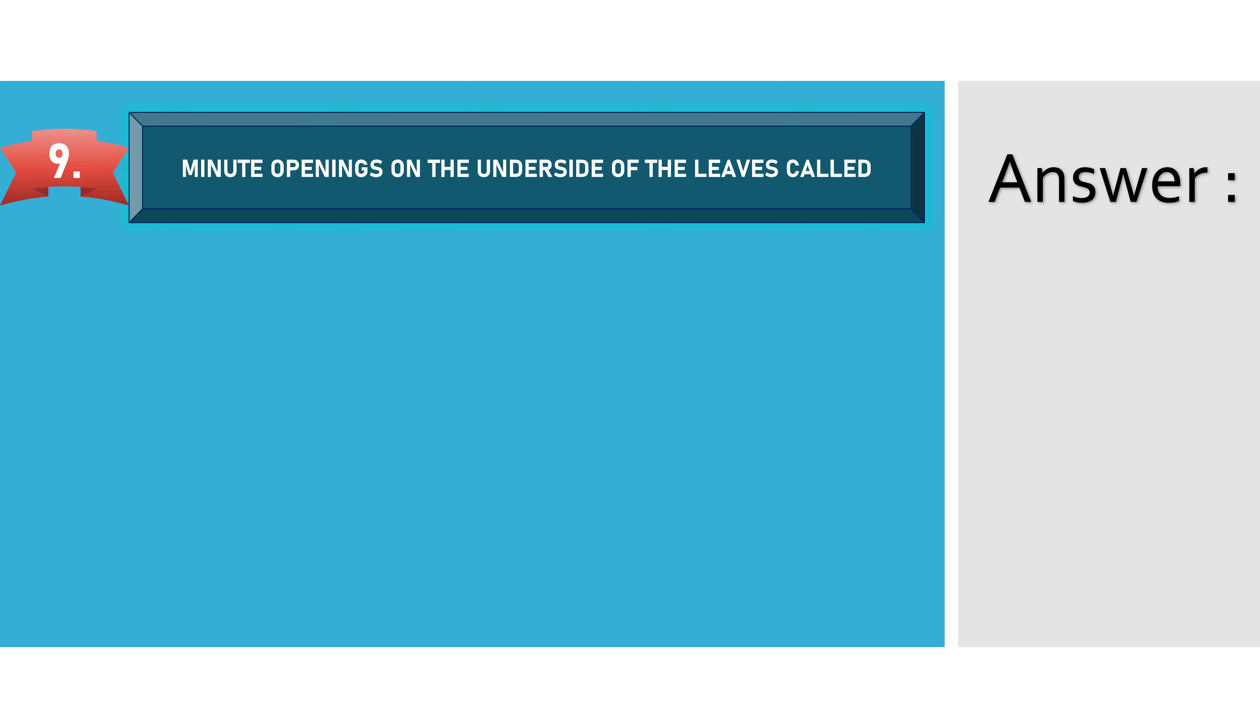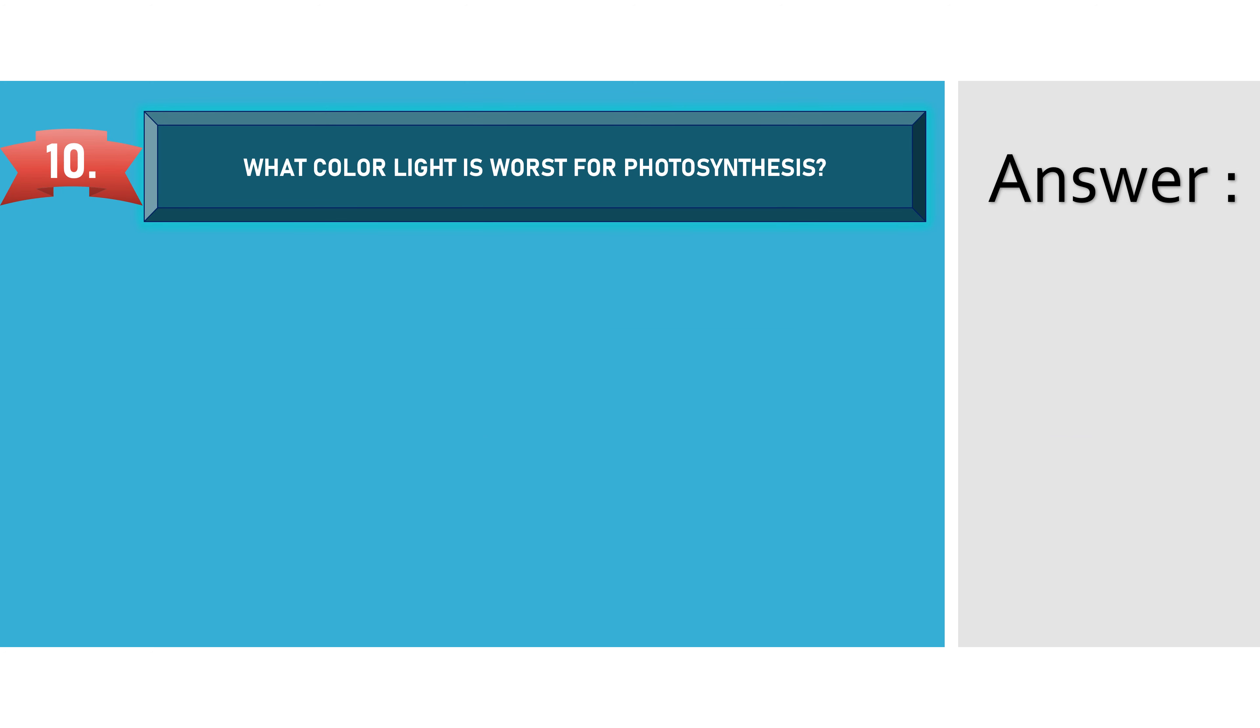Minute openings on the underside of the leaves... Option A: Chlorophyll. Option B: Guard cells. Option C: Grana. Option D: Stomata. The answer is stomata. What color light is worst for photosynthesis?